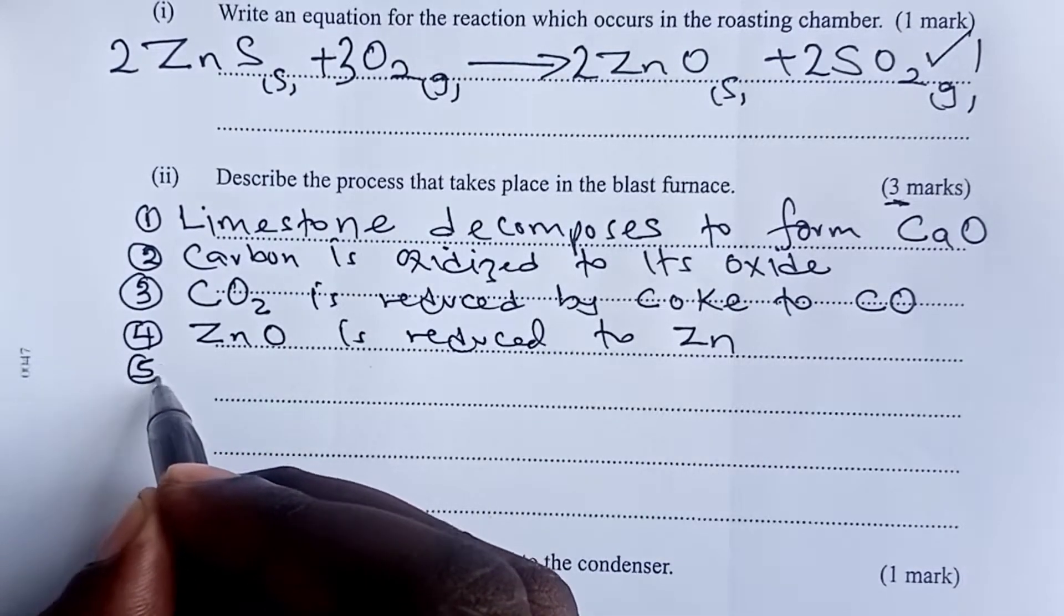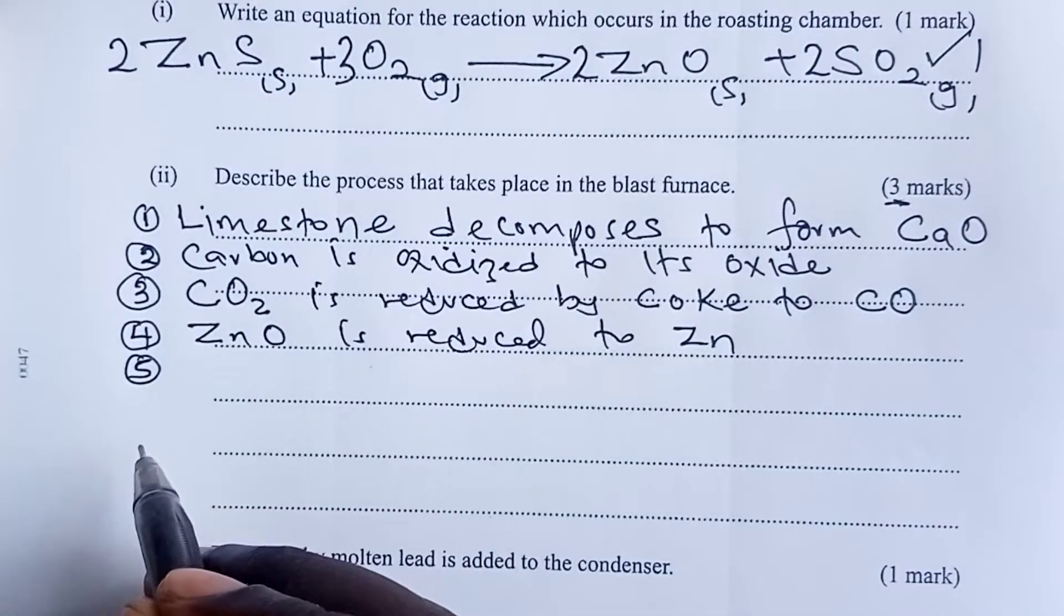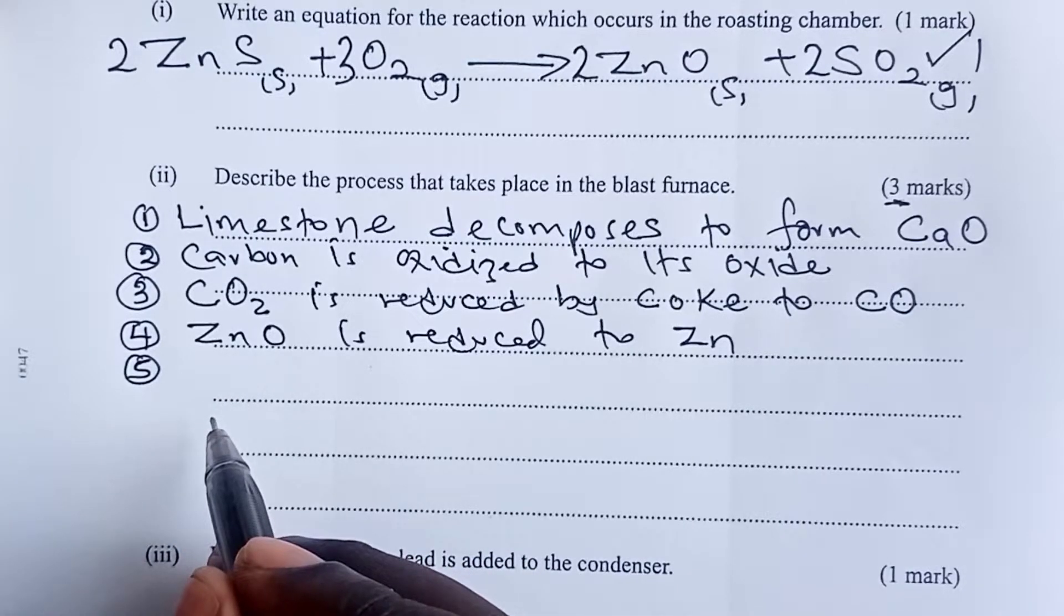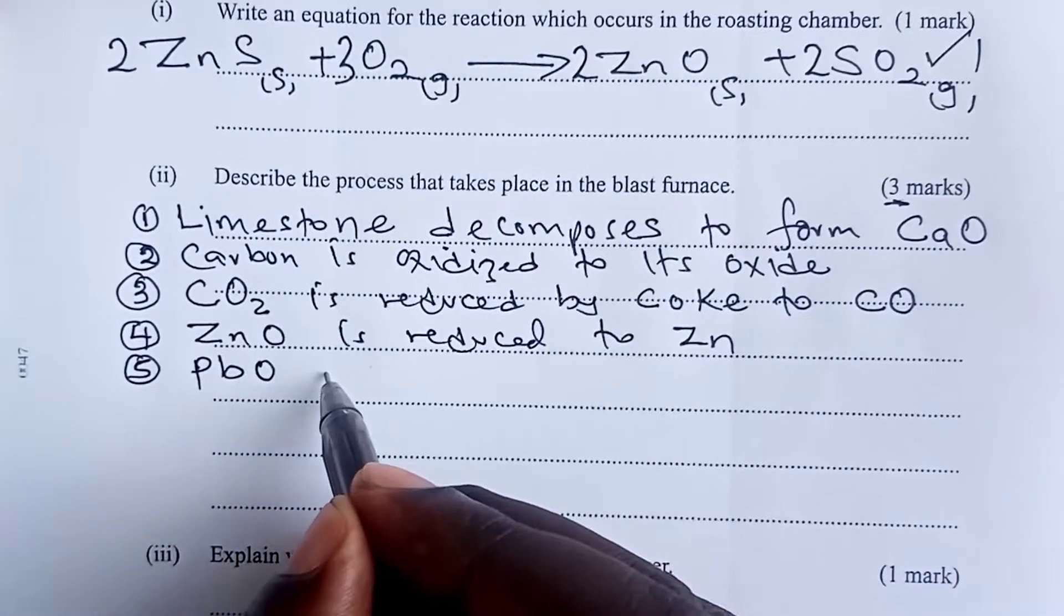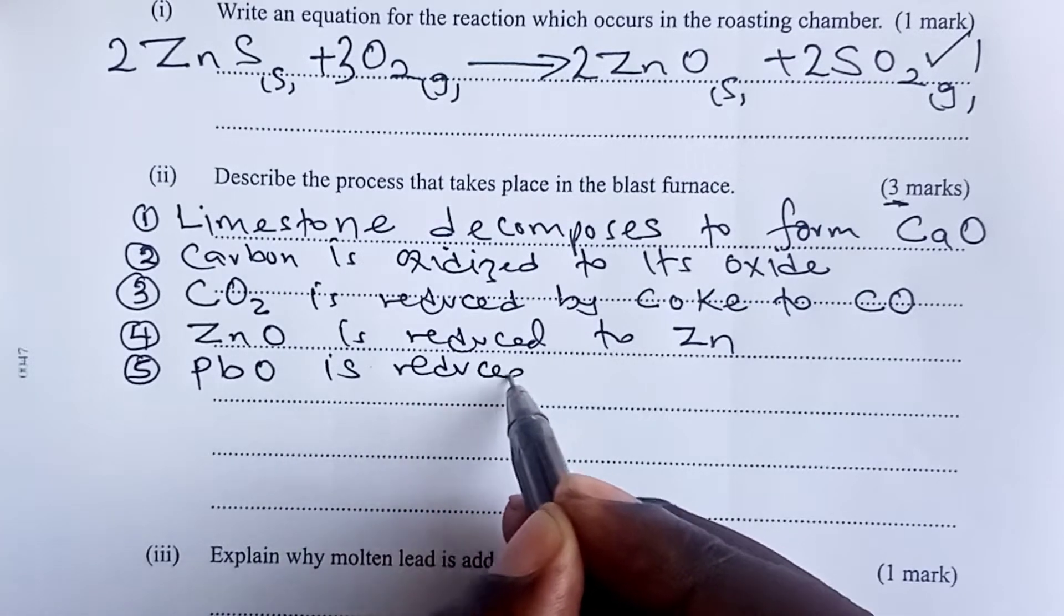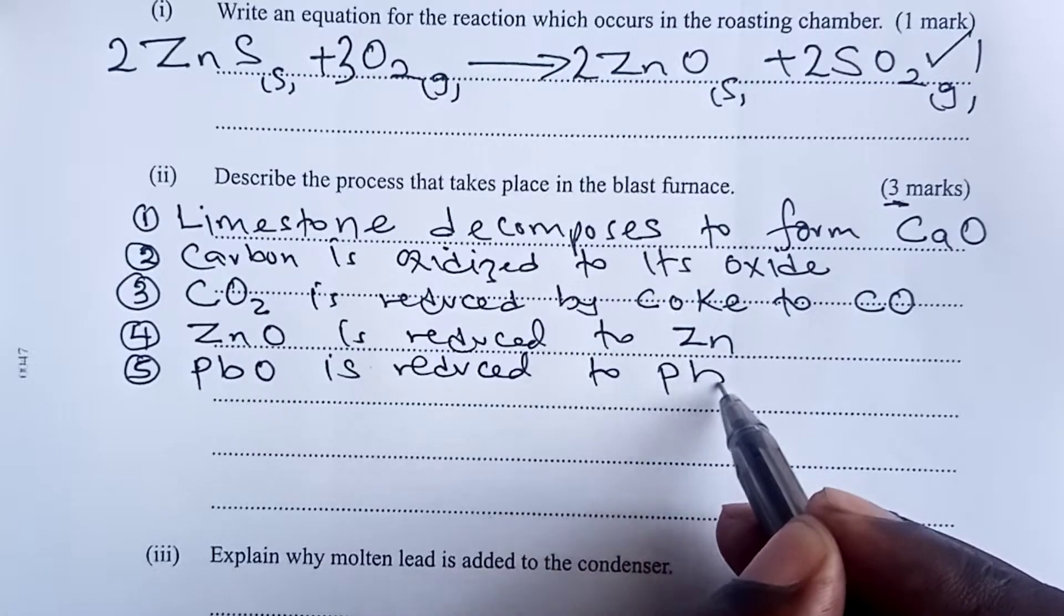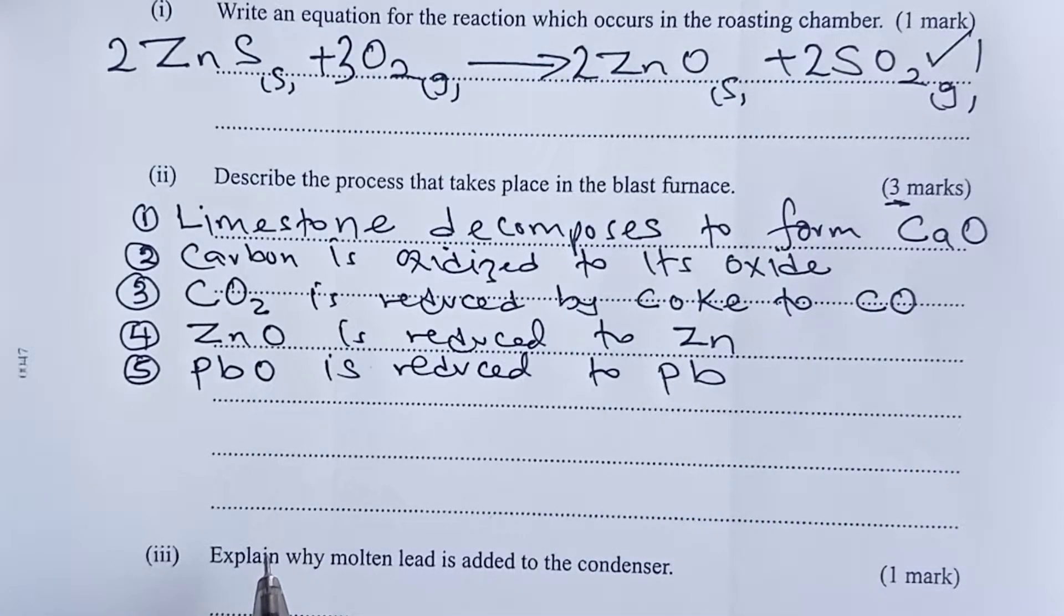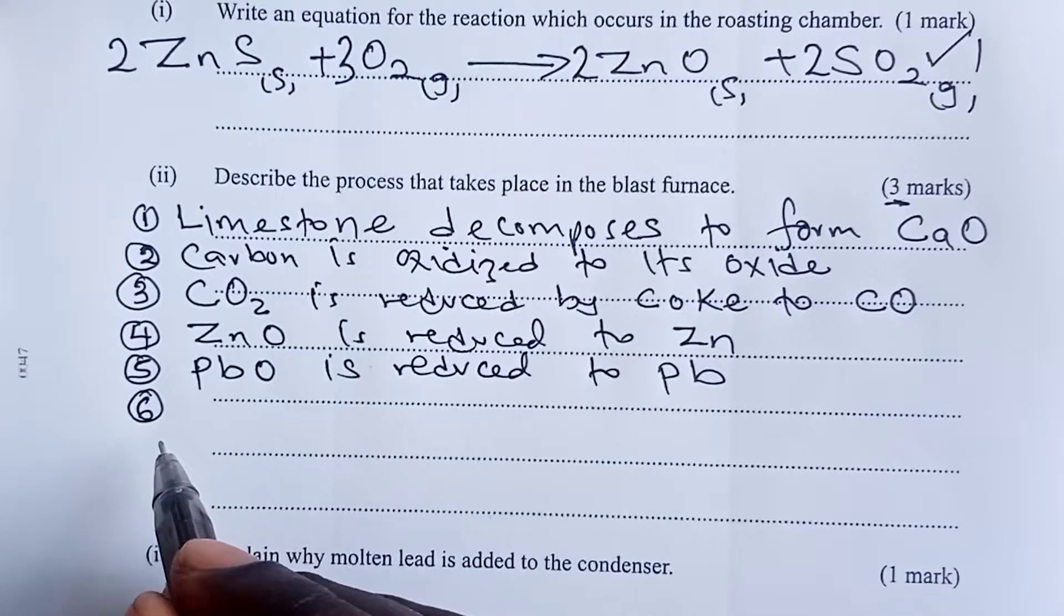Fifth, remember our zinc blend normally has some galena in it. So some traces of lead oxide will also be there in our ore. So any lead oxide that is present is also reduced to lead. And you can see even from our scheme that molten lead is also leaving our blast furnace.